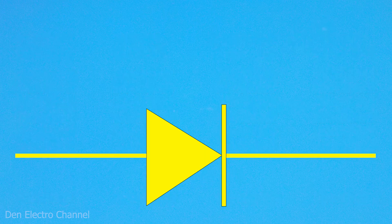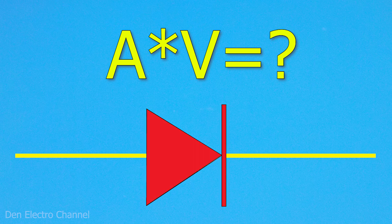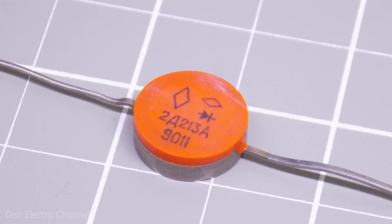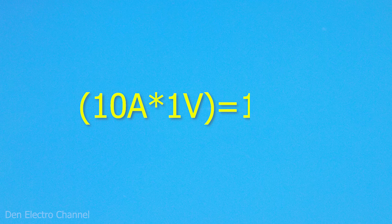Since in this video I am talking about the voltage drop on diodes, I would like to add a little about the thermal power released by them. Let's take the last diode 2D213, for example. At a current of 10 amperes, 1 volt of voltage drops on it. If we multiply these numbers, we get 10 watts of released thermal power.